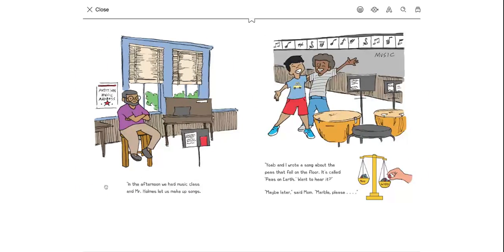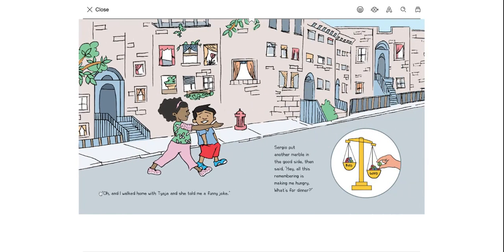Then what? In the afternoon, we had music class. And Mr. Holmes lets us make up songs. Yab and I wrote a song about the peas that fell on the floor. It's called Peas on the Earth. You wanna hear? Maybe later, said mom. Marble, please. Oh, and I walked home with Ty Yaha. And she told me a funny joke. Sergio put another marble on the good side. Then said, hey, all this remembering is making me hungry. What's for dinner?